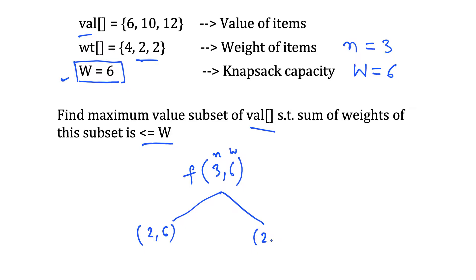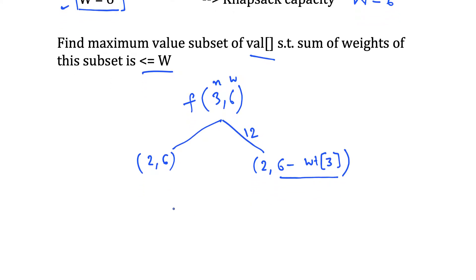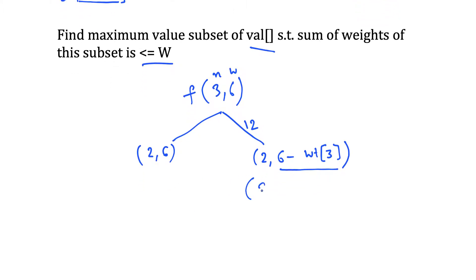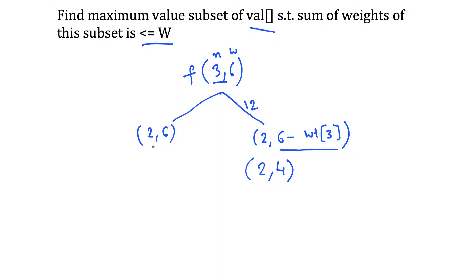If we pick the last element, we cannot pick it again because we can pick each item only once. So we have two items left but the weight is 6 minus the weight of the third item, and we add the value of the third item which is 12. Our capacity is reduced by the weight of that item, which is 2, so 6 minus 2 is 4. This node (3,6) breaks down into (2,6) and (2,4).